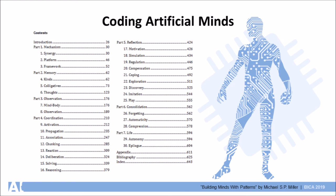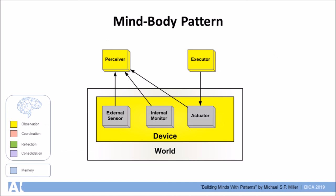Section six looks at various aspects of consolidation including forgetting, automaticity, and pattern compression.